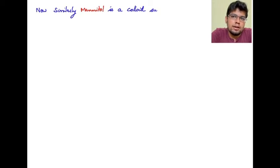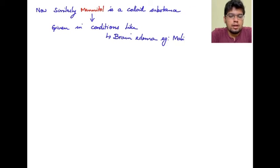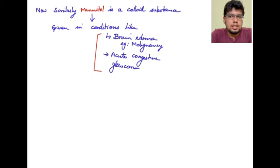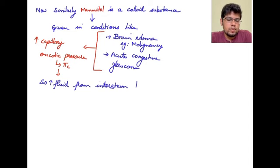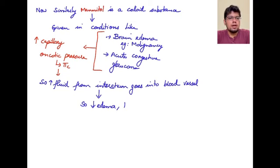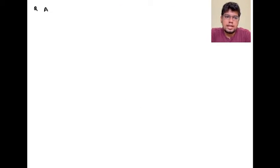Coming to the next clinical implication: we give mannitol for conditions like brain edema, for example in cases of malignancy or acute congestive glaucoma where there is increased intraocular pressure. How does mannitol act? Mannitol is a colloid substance that increases capillary oncotic pressure (pi_c), so increased fluid from the interstitium goes into the blood vessels, decreasing edema and IOP.